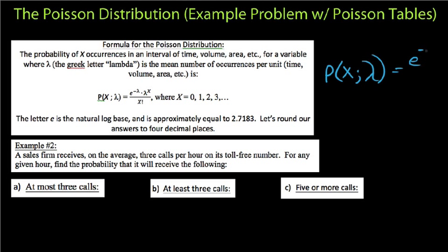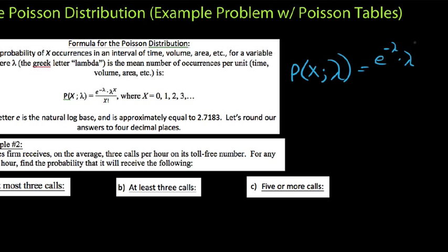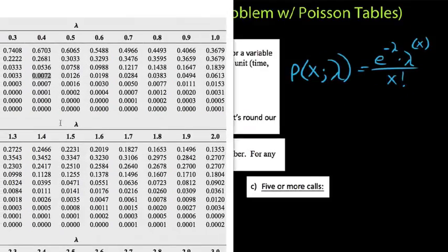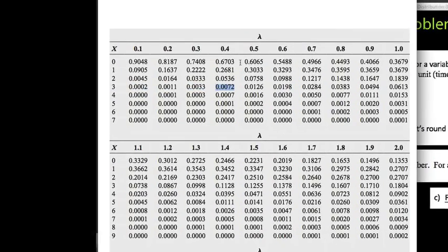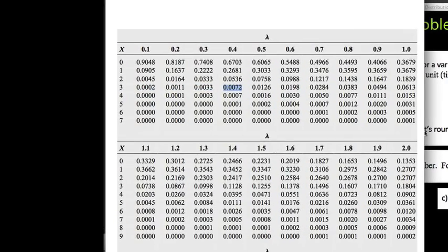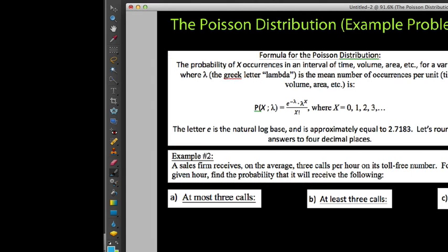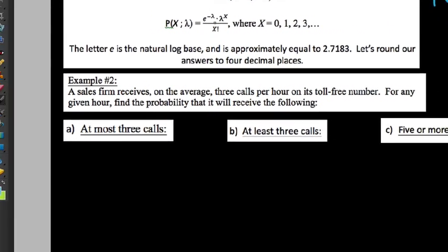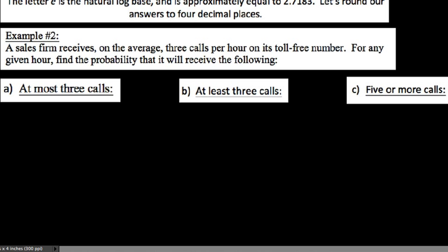We get our probability by taking E to the negative lambda, multiplied by lambda to the power of X (the number of occurrences), all over X factorial (the number of occurrences factorial). But we also have a set of tables we can use to figure this out, and that's what we're going to do in this video — use these Poisson tables. So let's take a look at the example I want to consider.